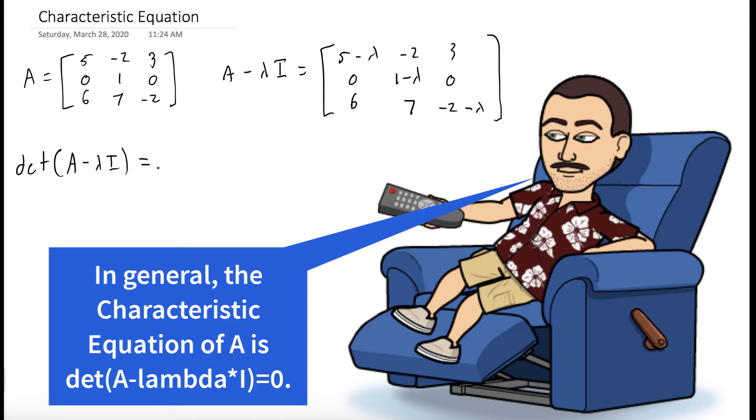Notice that most of the entries in the second row are 0, so we could use the cofactor expansion along the second row to find the determinant of A minus lambda I.